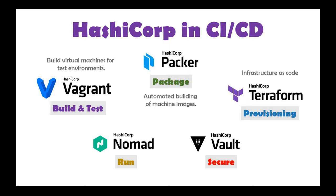HashiCorp Vault is a very useful tool for securing your secrets and data. In CI/CD pipelines you'll be creating a lot of environment variables — saving passwords or tokens to connect to different tools. For example, you have GitHub tokens or tokens from other tools that need to connect to each other. HashiCorp Vault lets you manage all these secrets: you create secrets in Vault and call them in the pipeline, so you don't have to embed tokens or environment variables as hardcoded values in your pipeline script.